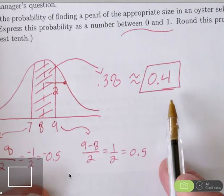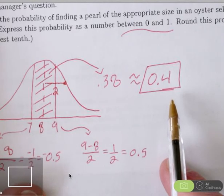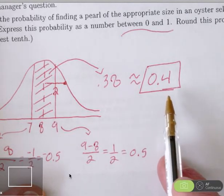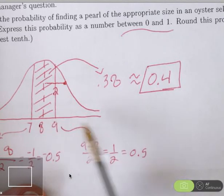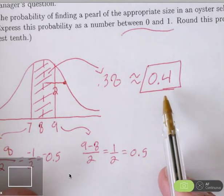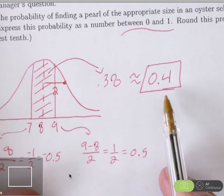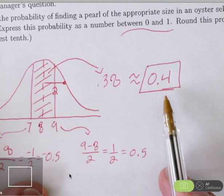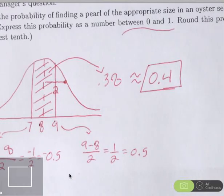So 40% - if we select a pearl randomly from this cultured pearl farm, if we randomly select one oyster, 40% of the time that diameter for the pearl in that oyster will be between 7 and 9 millimeters. That 0.4 is the probability that if I randomly choose one oyster, that's the chance that oyster has within it a pearl of the appropriate size. This is the beginning of a number six question. What I wanted to do was to use this to show you in the context of this question we are applying the normal distribution. We can find the percentage and the probability by using the shade norm command with z-scores.